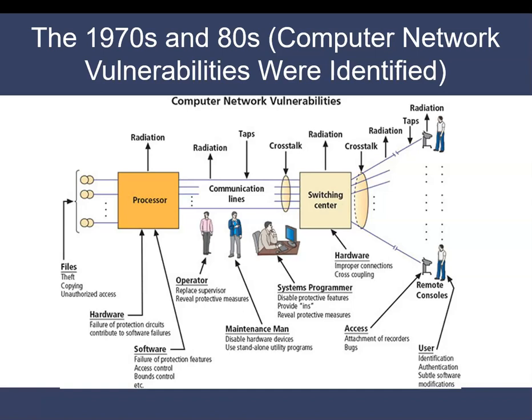It began with RAND report R609, sponsored by the Department of Defense, which attempted to define multiple controls and mechanisms necessary to the protection of a multilevel computer system. The scope of computer security grew from physical security to include safety of the data itself, limiting random and unauthorized access to that data and involvement of personnel from multiple levels of the organization. At this stage, the concept of computer security evolved into the more sophisticated system we call information security.